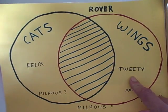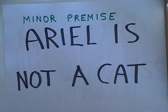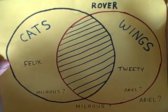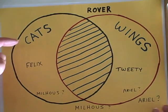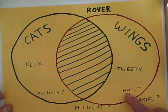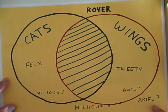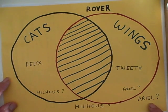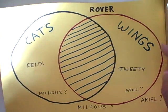There are also some minor premises that would not lead to valid conclusions. For example, if we said Ariel is not a cat — all we know is that Ariel is not within this crescent over here. But where is Ariel? Is Ariel an angel who has wings, or is Ariel a mermaid who does not have wings? We don't know from that information.